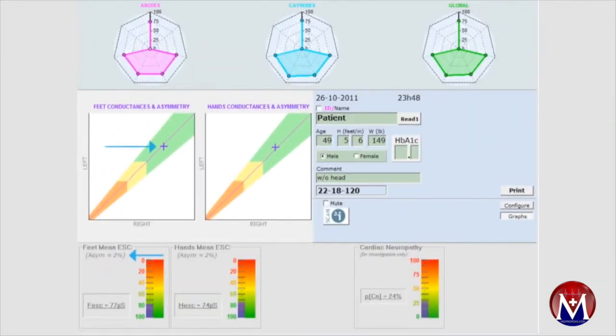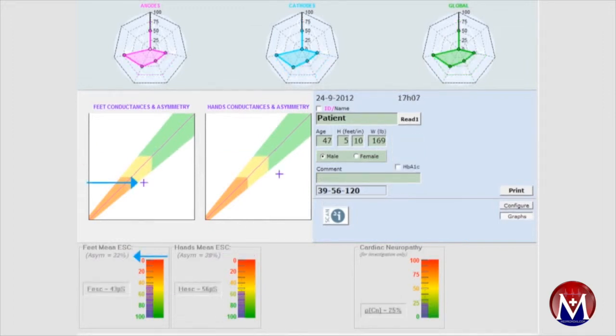The amount of observed asymmetry is an indicator of the type of peripheral neuropathy. For example, symmetrical peripheral neuropathy would be consistent with either a pre-diabetic or diabetic complication.